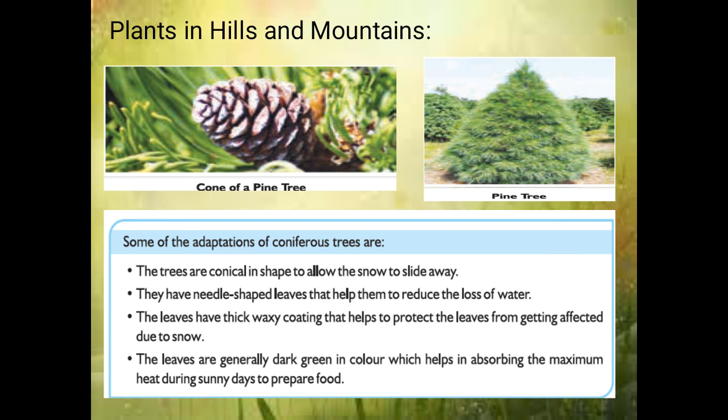Similarly, plants in hills and mountains. Hills and mountains have very snowy conditions. In order to cope with that, the trees there are designed in a conical form so that the snow can slide away. They have long needle-shaped leaves to prevent the loss of water. These leaves are very dark in color in order to absorb more sunlight for preparing food. These leaves also have a waxy coating which can prevent damage due to snow. In this way, trees on hills and mountains will get adapted.